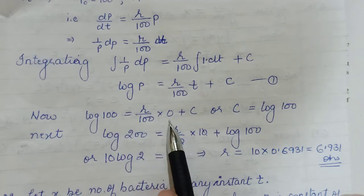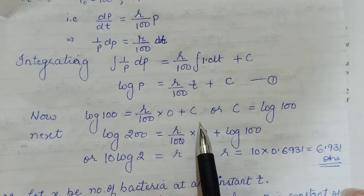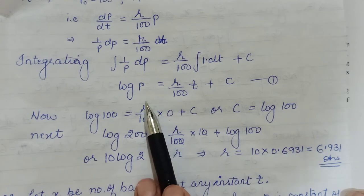P was 100, rupees 100. That time T will be taken as 0. So that will help you find your C as log 100.